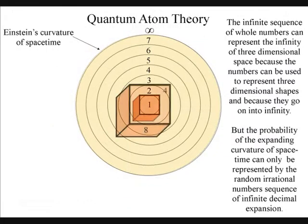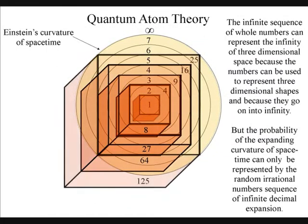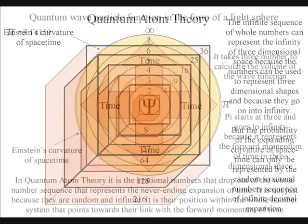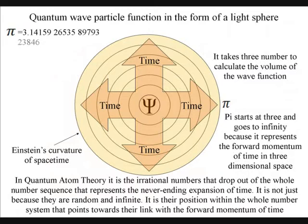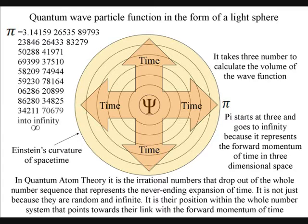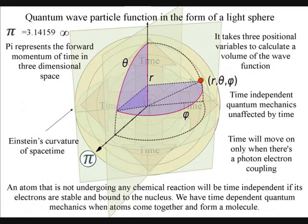It is easy to see how our infinite sequence of whole numbers can represent the infinity of three-dimensional space, because the numbers can be used to represent three-dimensional shapes. But it is the irrational numbers that drop out of the whole number sequence that represent the never-ending expansion of time. In quantum atom theory, the irrational number pi is a physical constant and represents the expanding curvature of space-time. Its position within the whole number system points towards its link with the forward momentum of time. In quantum physics, it takes three quantum numbers to calculate the wave function as it expands as an inverse volume of space, and the number pi is in the calculations at almost every stage, representing the geometry of three-dimensional space-time.